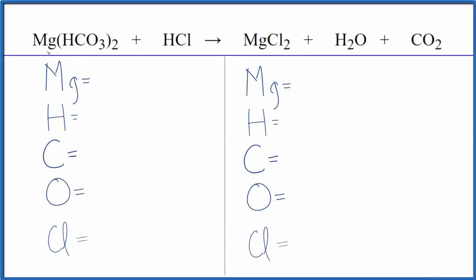In this video, we'll balance the equation for Mg(HCO3)2 plus HCl. This is magnesium bicarbonate, also called magnesium hydrogen carbonate, and this is hydrochloric acid.